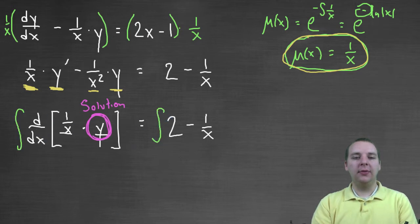And so if we do, sure enough, the derivative goes away, and you would get one over x times y equals, and then let's integrate the right hand side.